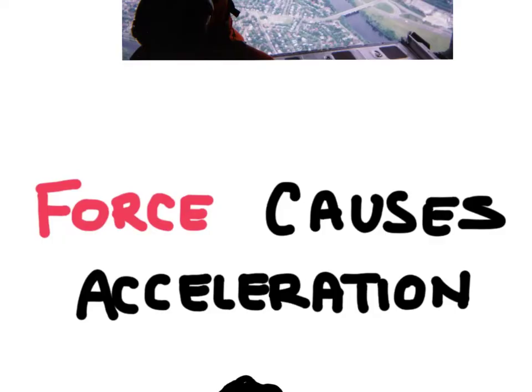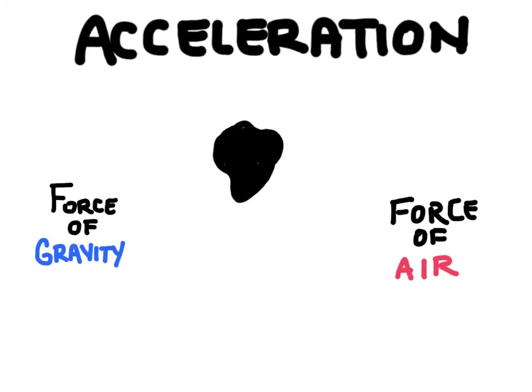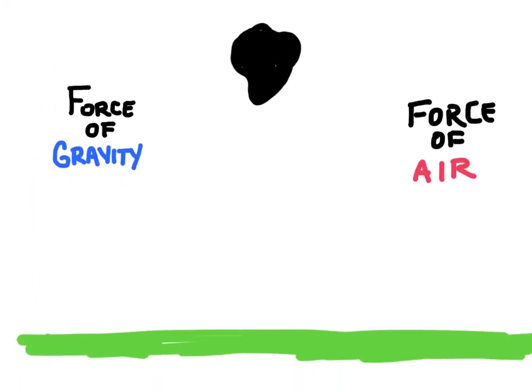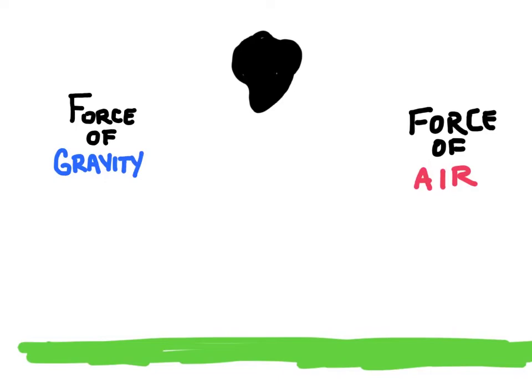An object that's in free fall is going to experience two forces. We will have the force of gravity, which is pulling the object downwards, and then we'll also have the force of air resistance or air friction, and this force is going to be going in the opposite direction — pulling the object upwards.